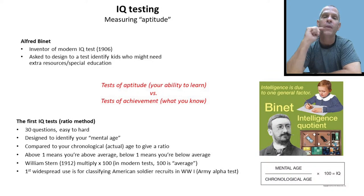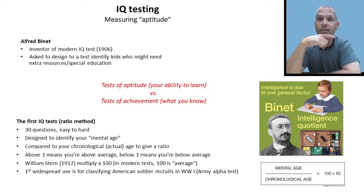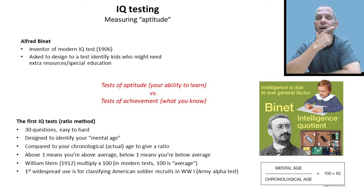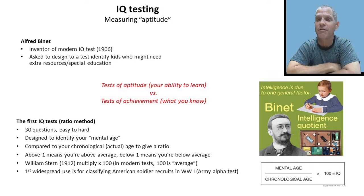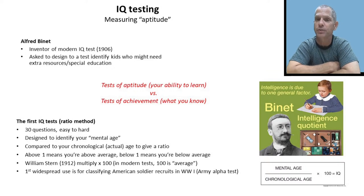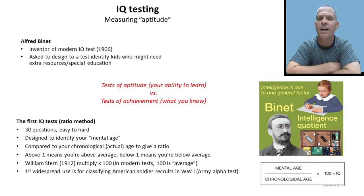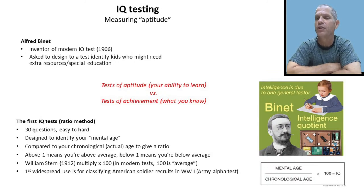Alfred Binet was asked by the French government — write that down, that is important — to invent a test to help identify students who were slow or behind in school who needed extra help, developmentally challenged children. He came up with a short IQ test involving 30 questions, which he thought measured your aptitude rather than your achievement.